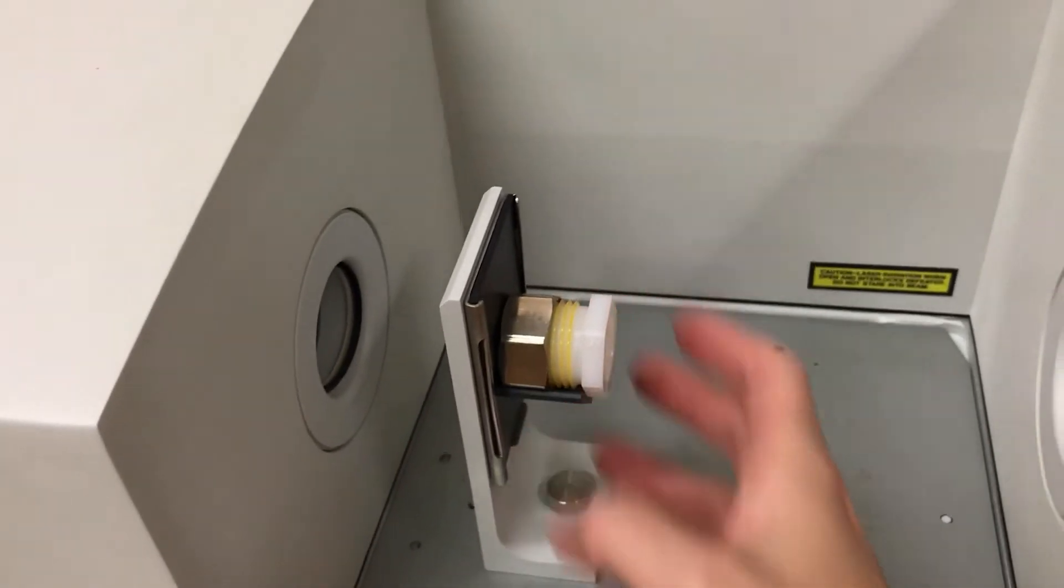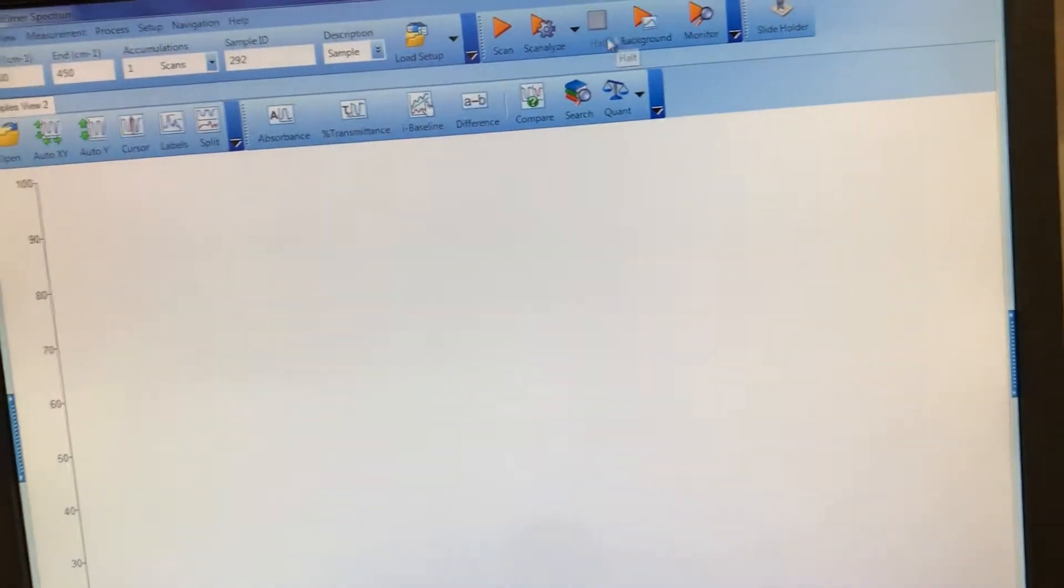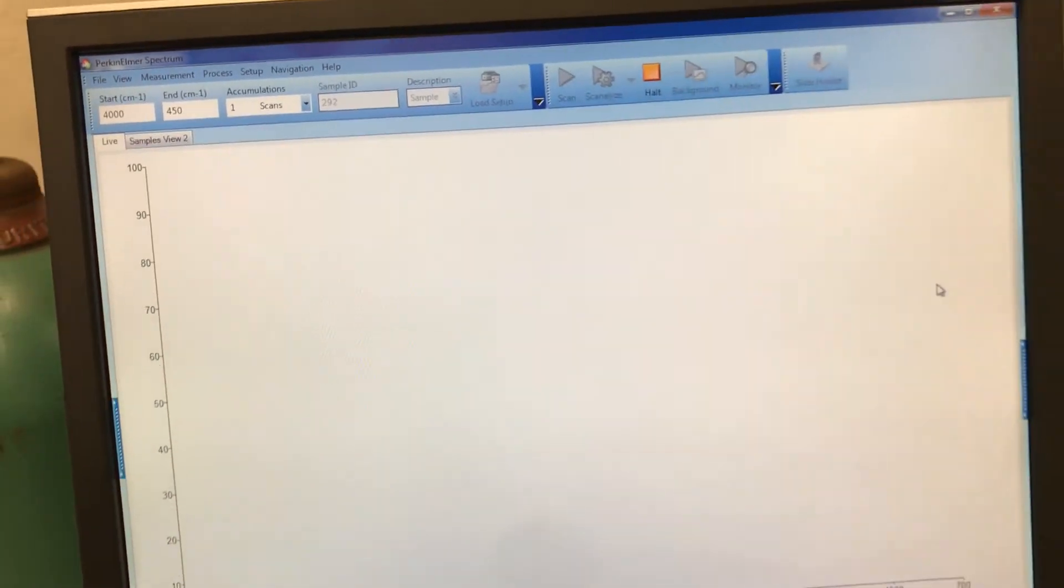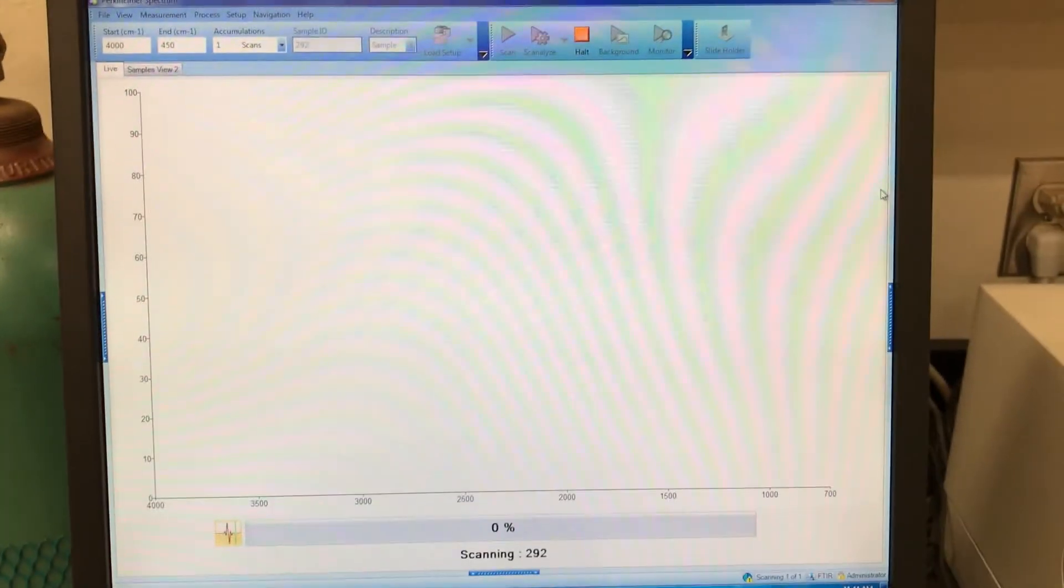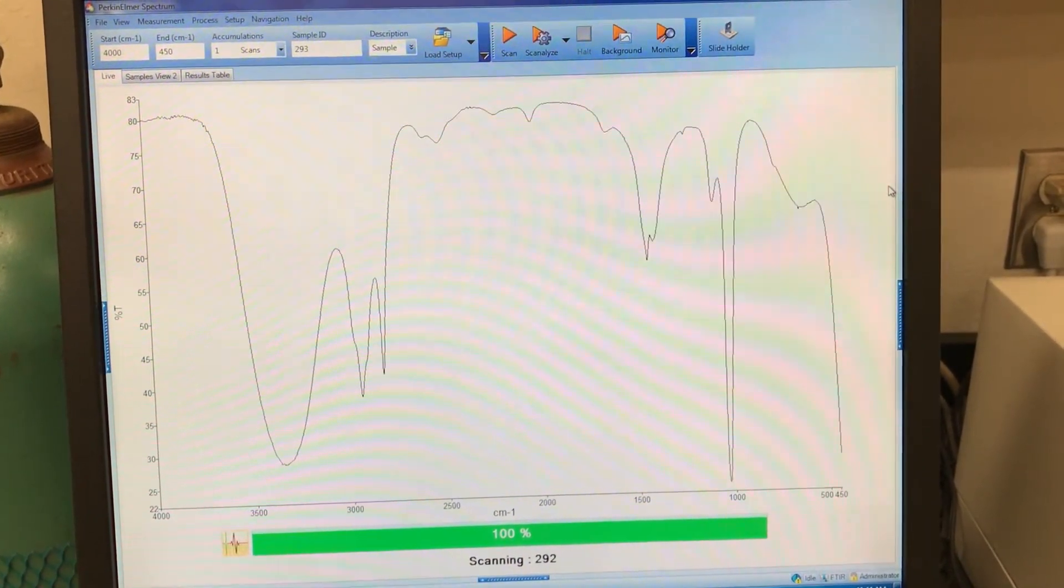IR is going to be sent through the instrument through the air and through your sample and so then you go to the computer and push scan and by having that background saved the computer will subtract the two spectra which means that what it shows you is only the absorbances from your sample not from the air.